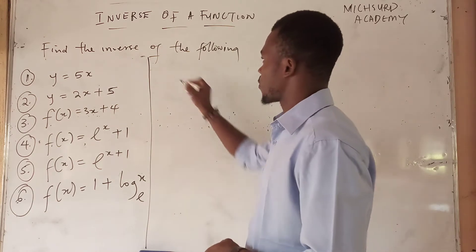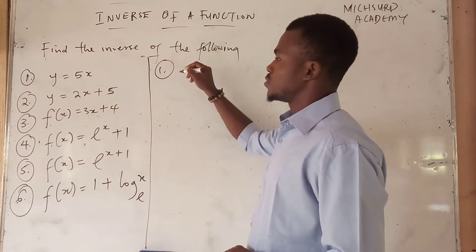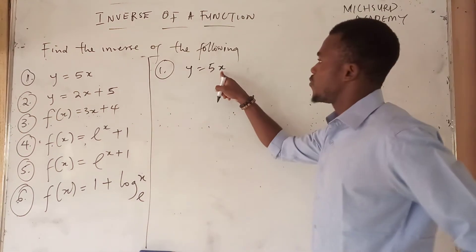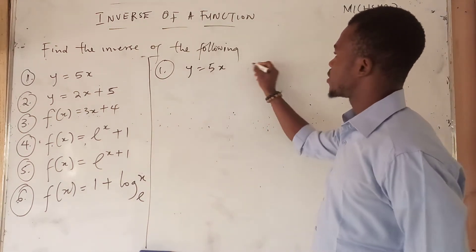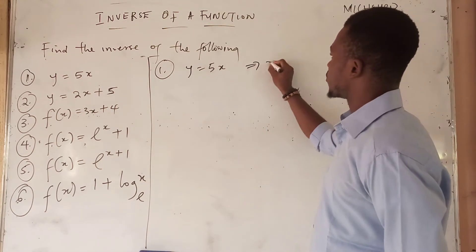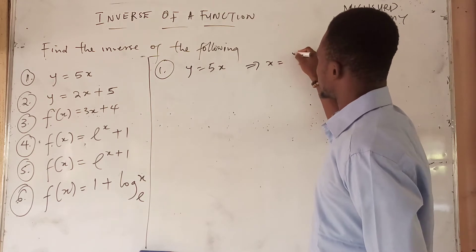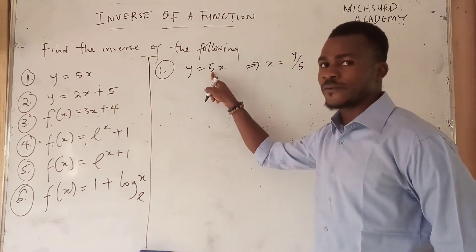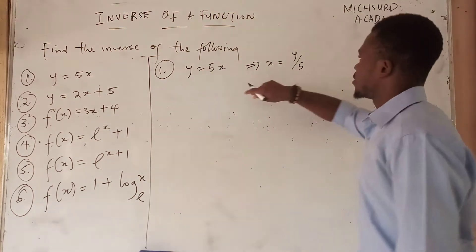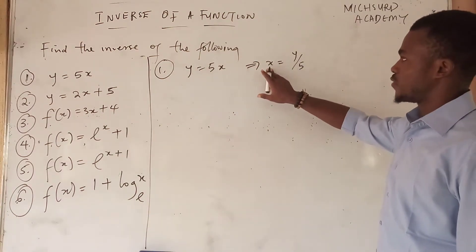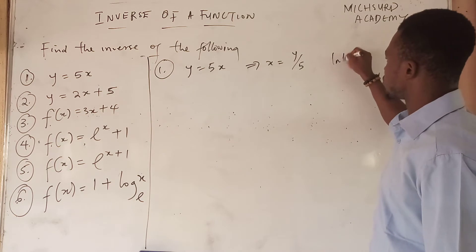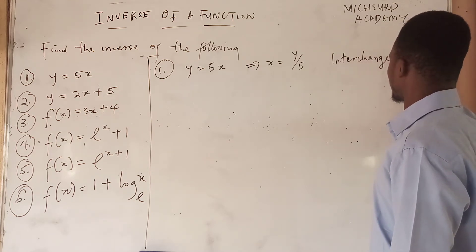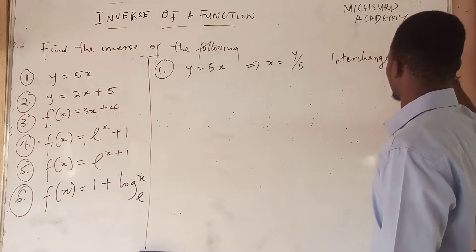Let's look at the first one. Here we have y is equal to 5x. Now, if we make x the subject formula, this would give us x is equal to y over 5 — that means we divide through by 5. Now we have made x the subject formula, so the next thing we do is to interchange x and y.